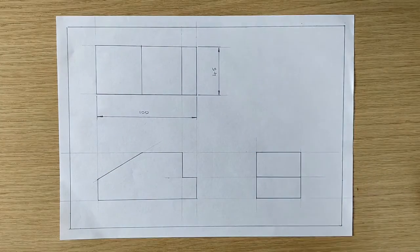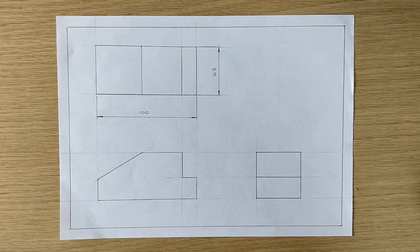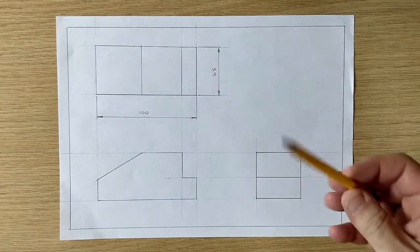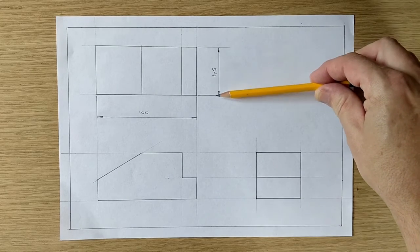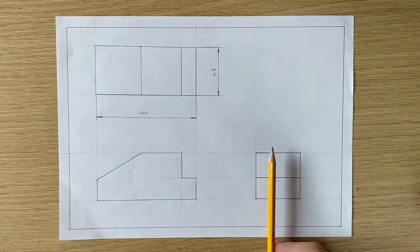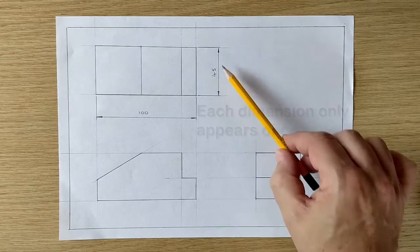I'm now going to add the rest of the dimensions to the drawing using exactly the same method and then we can have a look at what I've done, how I've laid it out. Before I do that, just it's worth mentioning that I've dimensioned that width 45. I don't have to put that anywhere else so I don't have to put it there because we know that width now, we know it's 45.